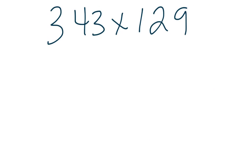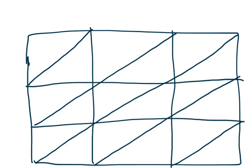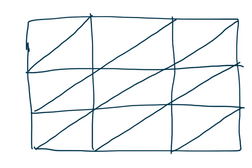Alright, one more problem to look at, which is 343 times 129. Again, we have 3 numbers, so that means we're going to have 9 squares in our box. And here's our box here. I've already made this one. So 3, 4, 3, 1, 2, 9. Color.